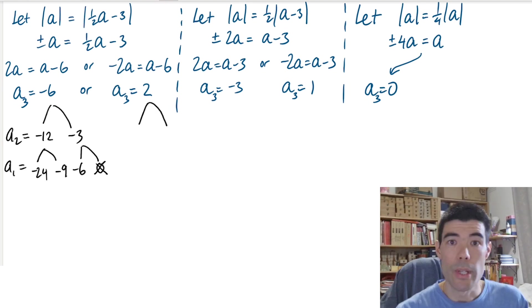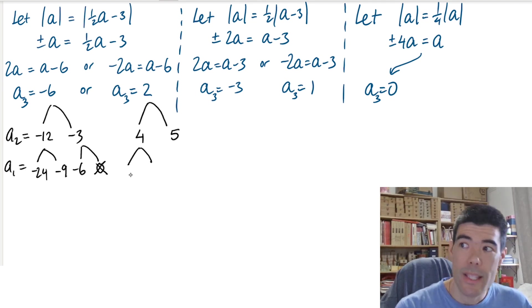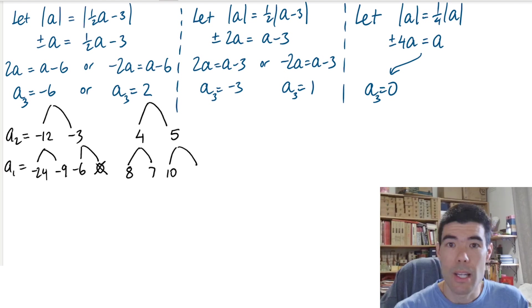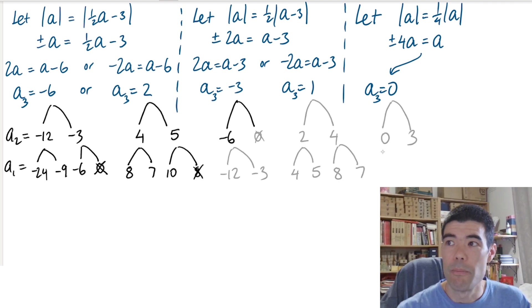Continuing in a similar way from a_2, double to get 4 or add 3 to get 5. Back to a_1, double to get 8, add 3 to get 7. Or from 5, double to get 10. Again, we're not going to add 3 because 8 is even, we wouldn't have subtracted 3 from there. Okay, we can work backwards in a similar way from these three cases to get some more possible values for a_1.